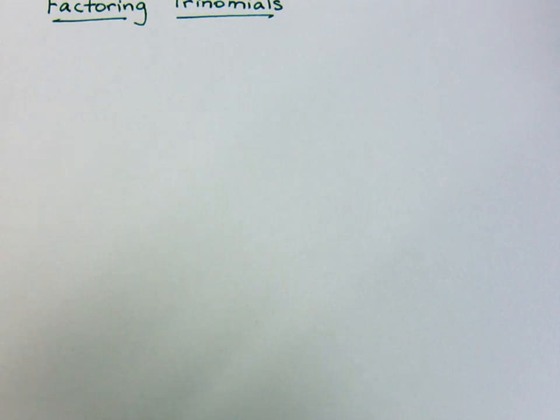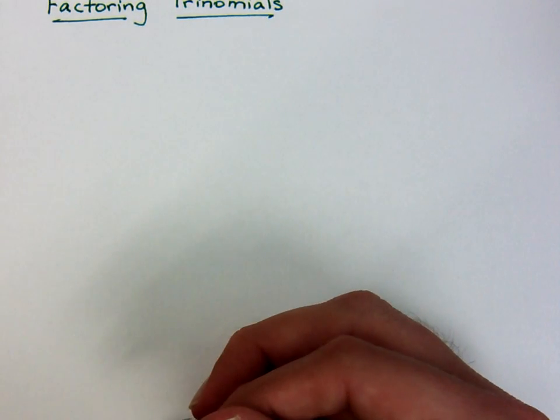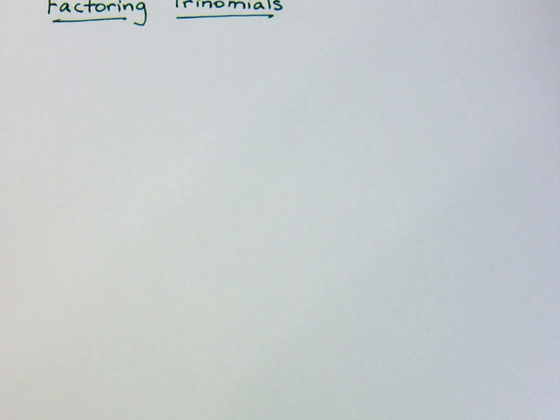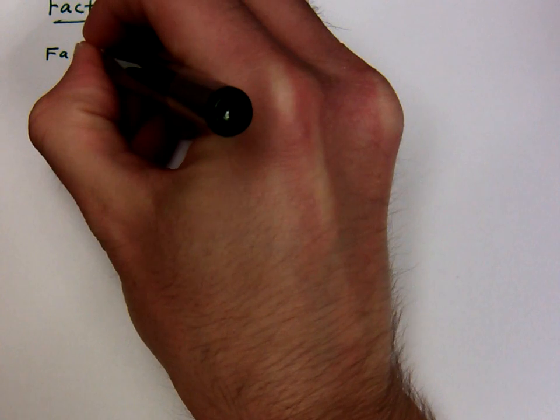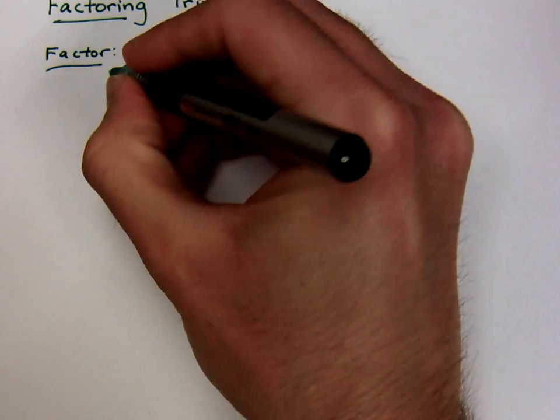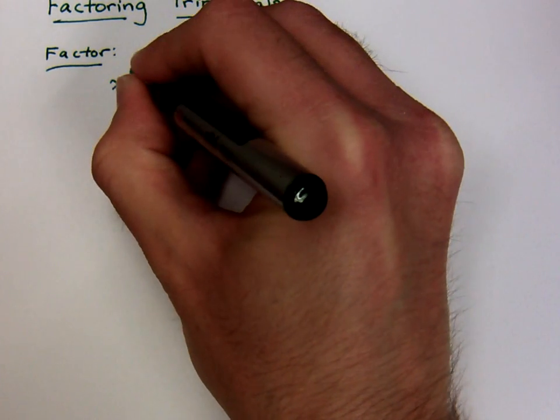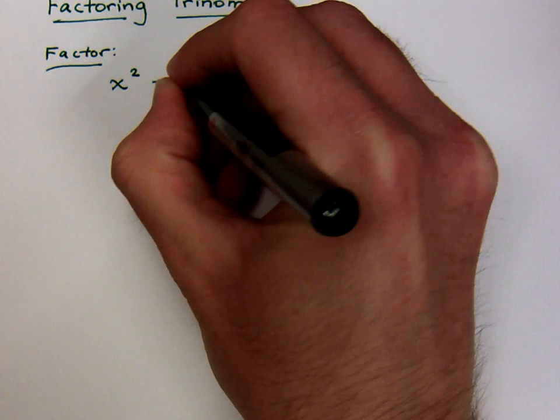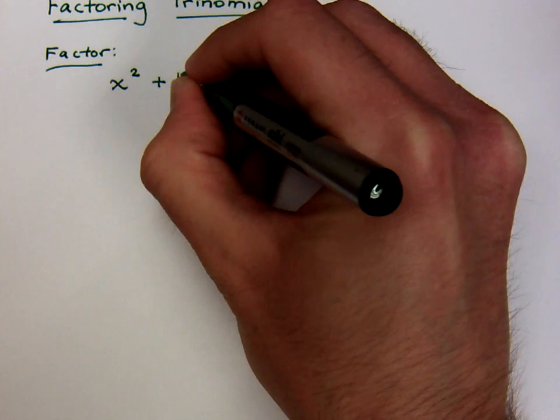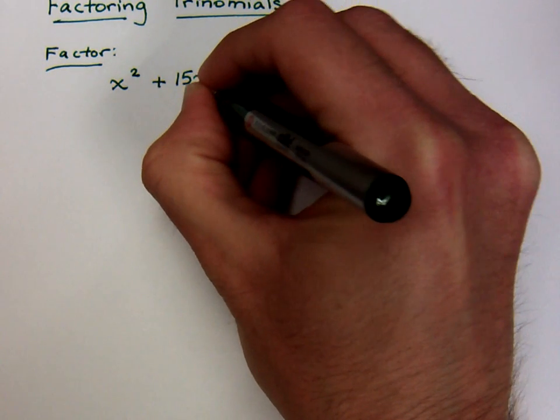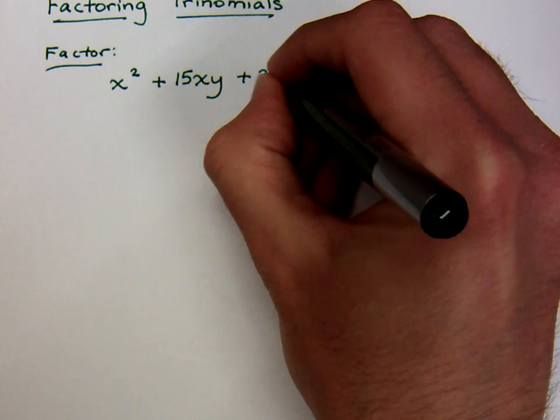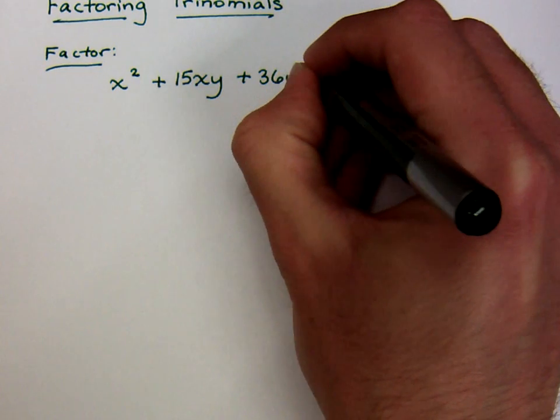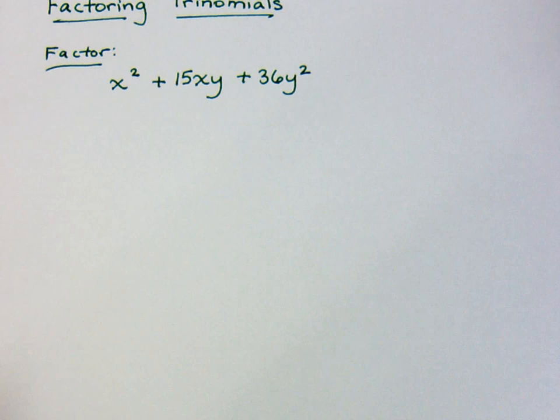Let's continue our discussion about factoring trinomials. Let's look at some guys that are maybe a little bit more difficult, a little bit more challenging for us. Let's take a look at this one: x squared plus 15xy plus 36y squared.